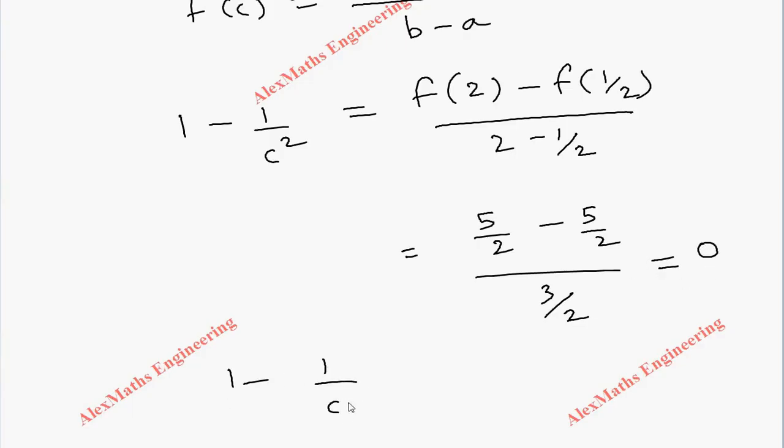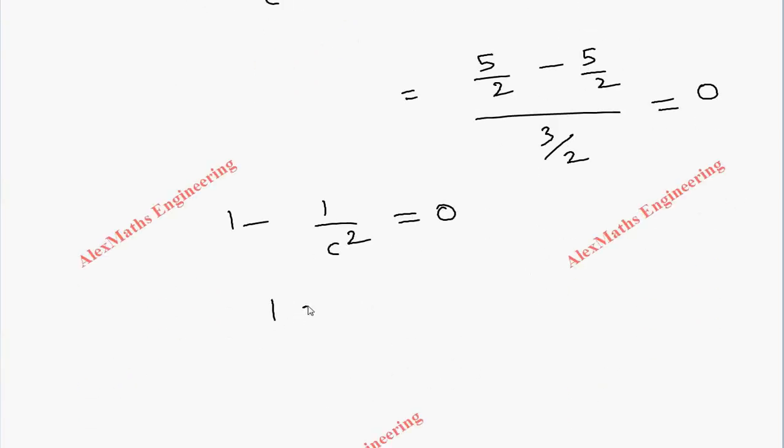So 1 - 1/c² = 0. From this, 1 = 1/c². By cross multiplication, c² = 1. So c = ±1.